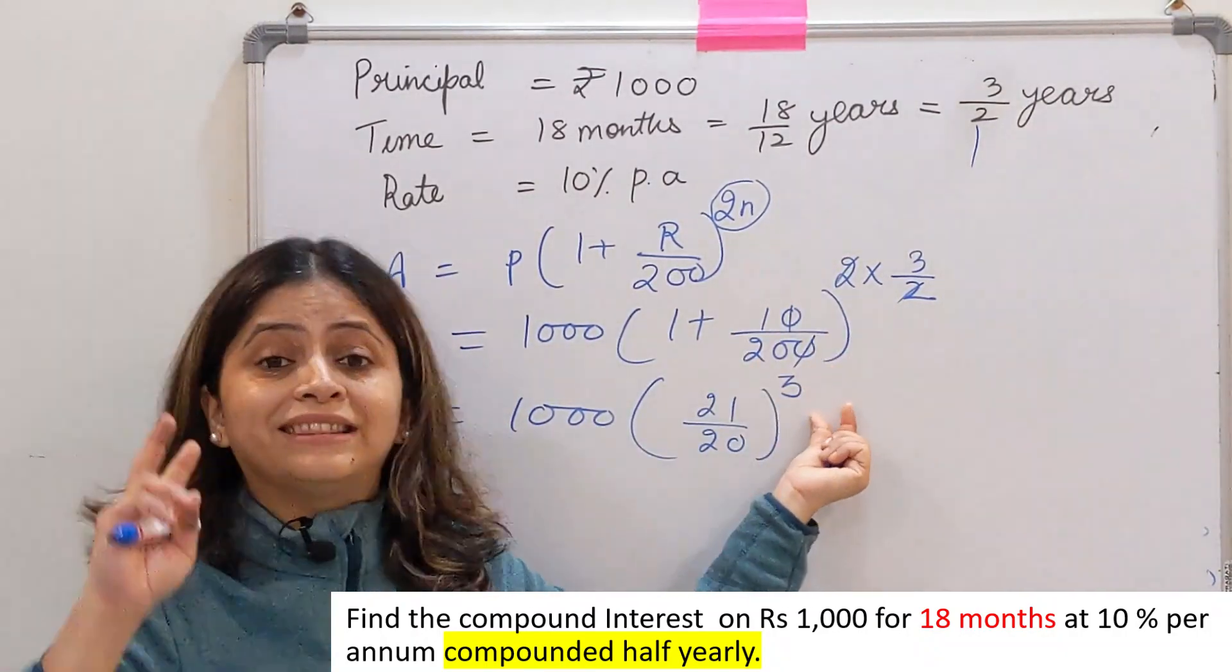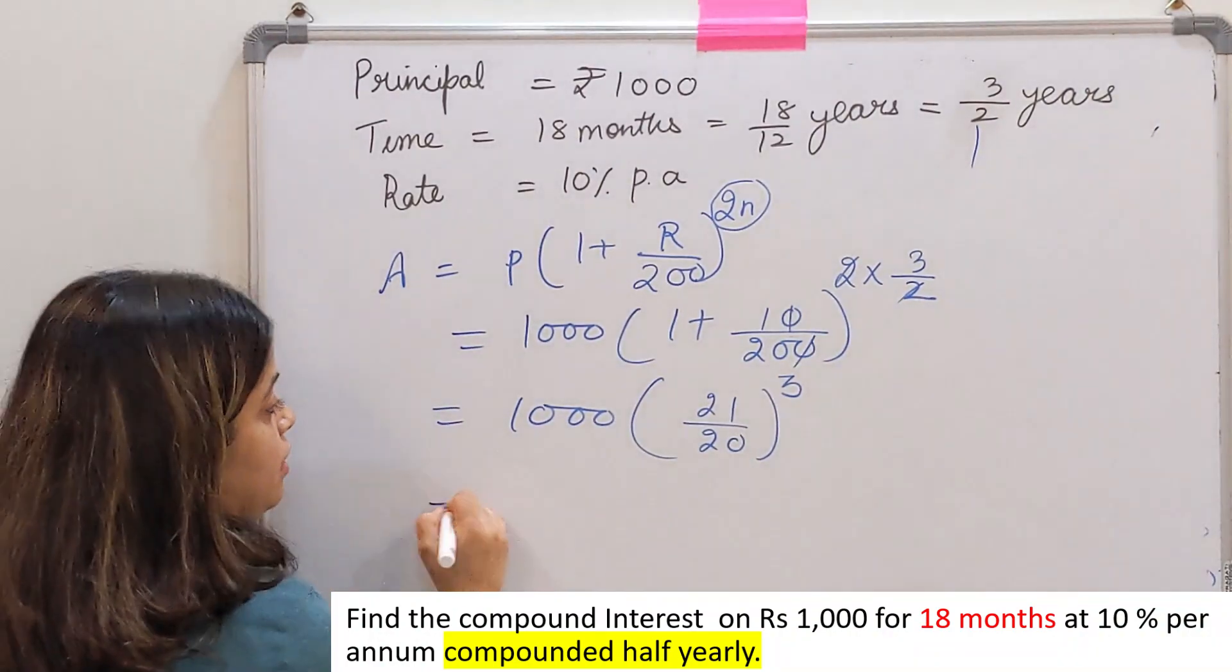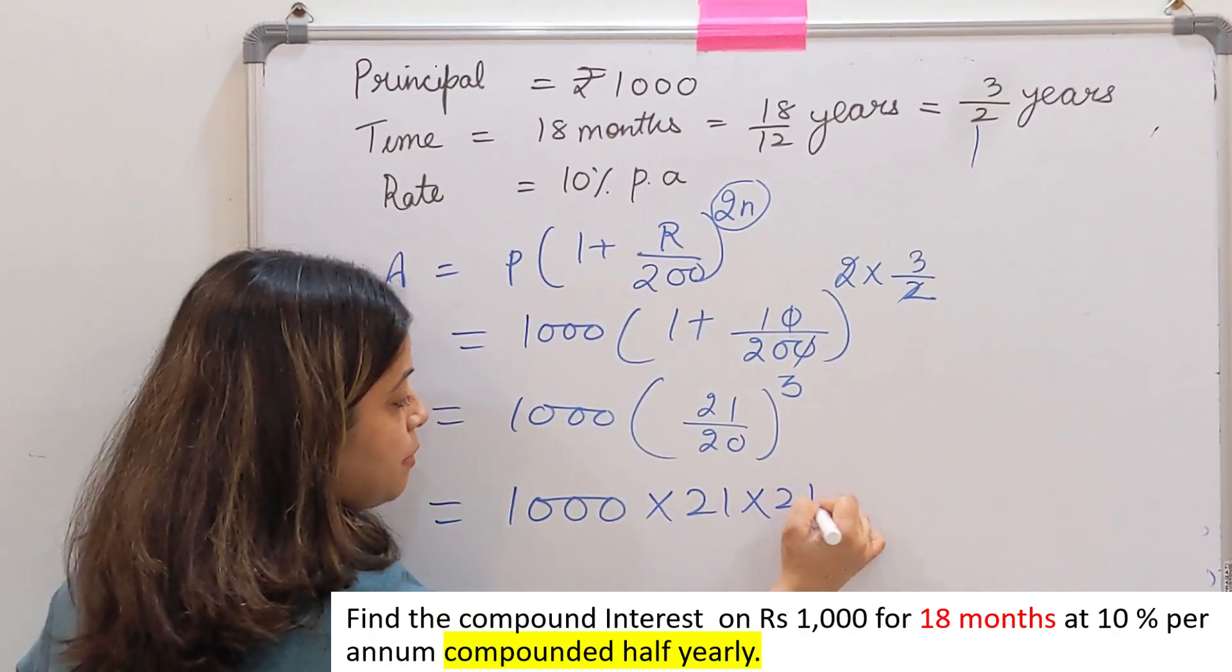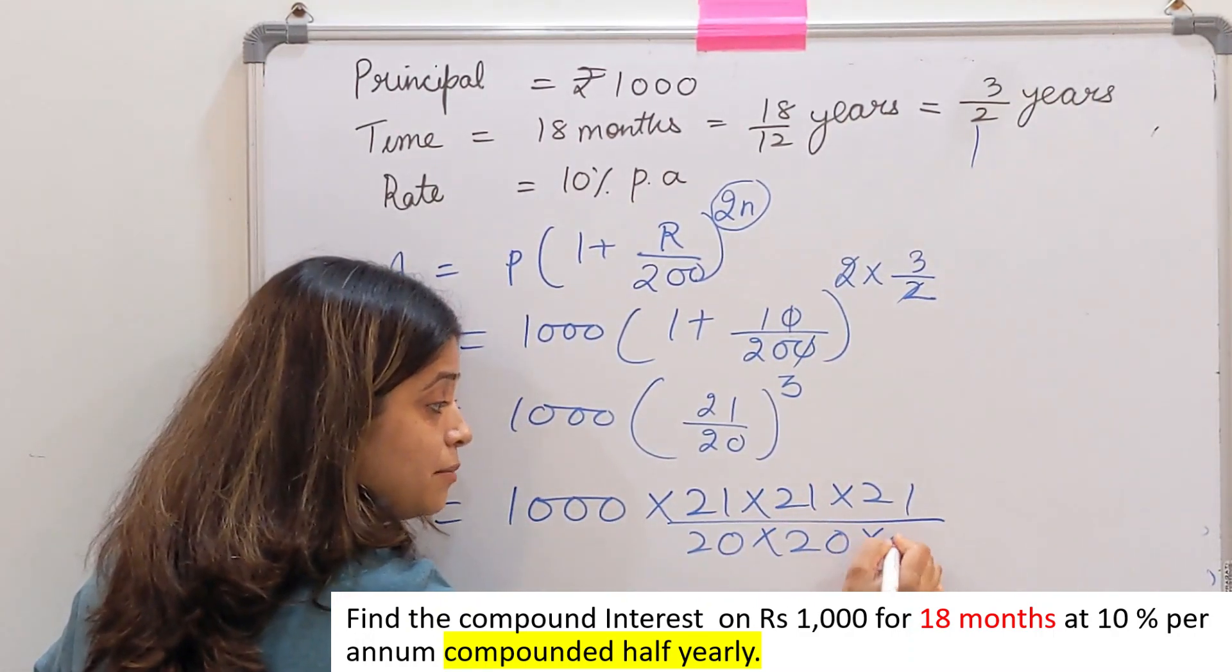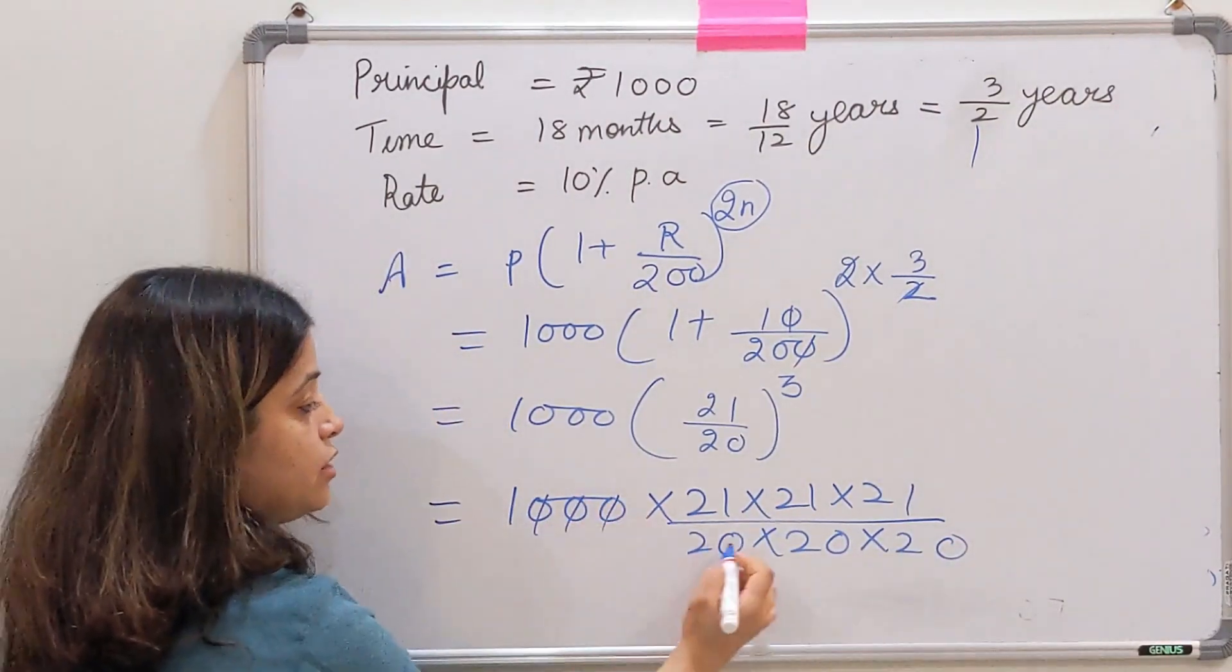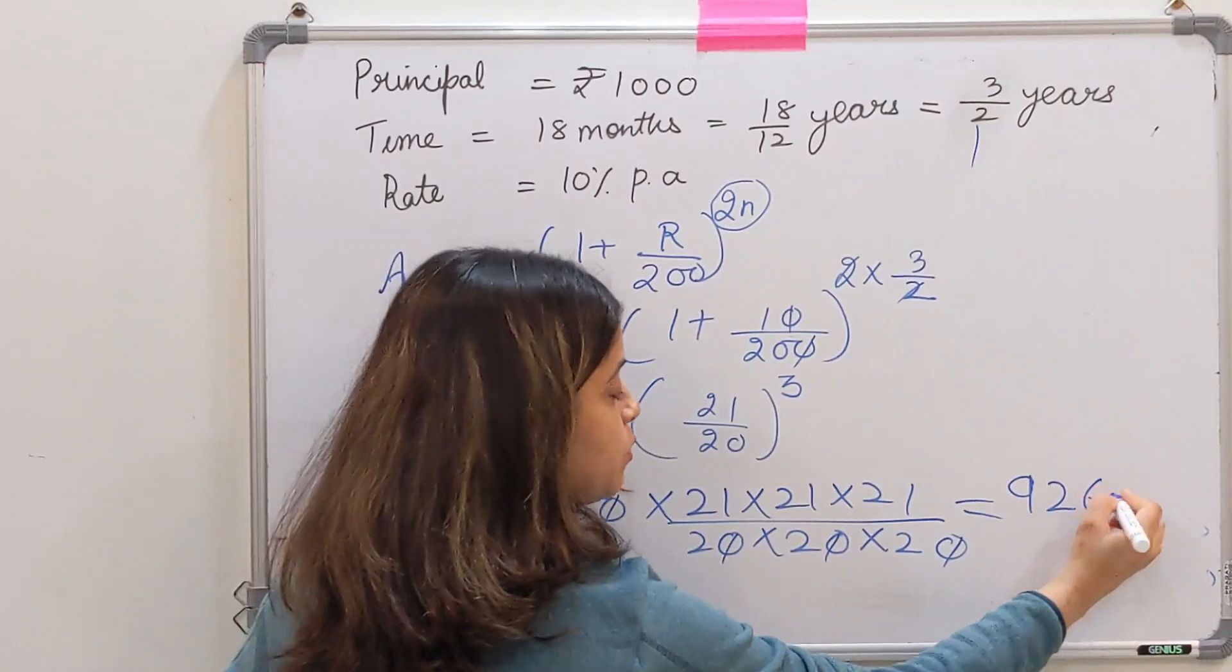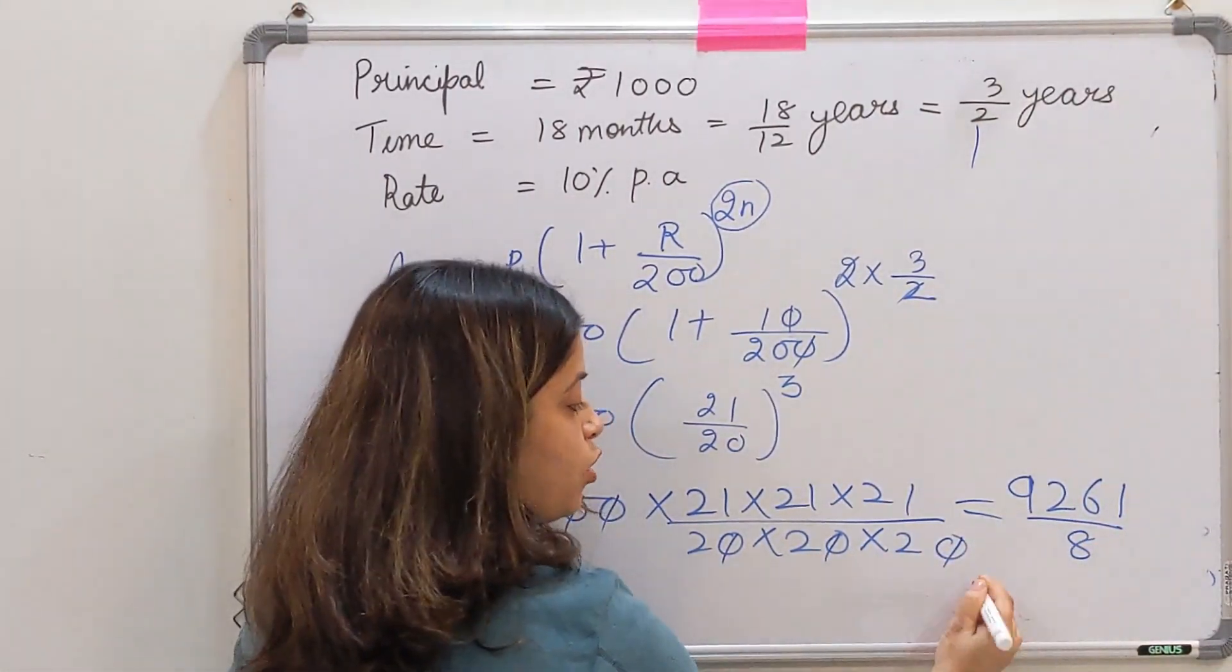So यह हो गया 21 को तीन बार multiply करना है, 20 को भी तीन ही बार multiply करना है. Yes, 30 cancel, 30 cancel. Answer: 9261 by 8000. After solving this, you get 1157.63.